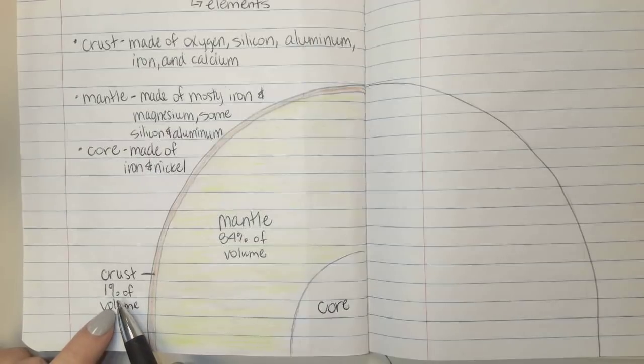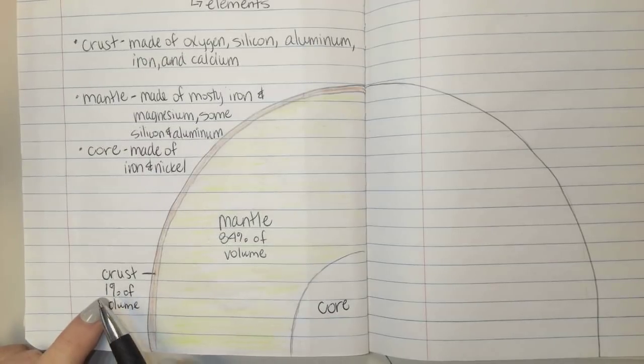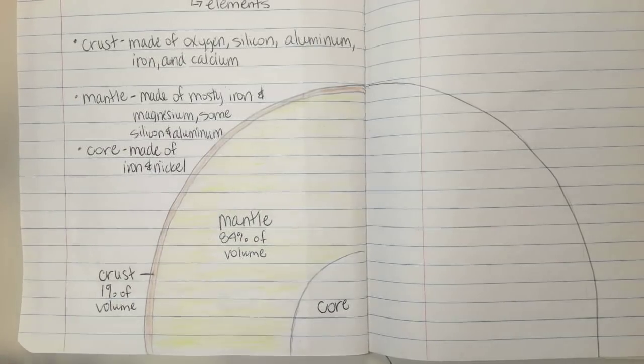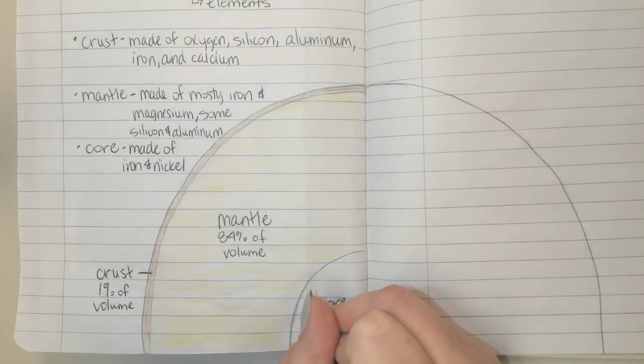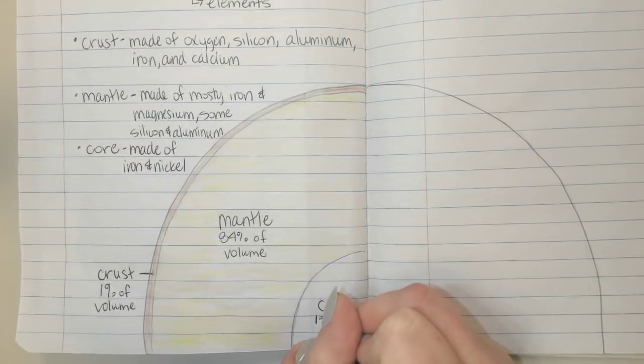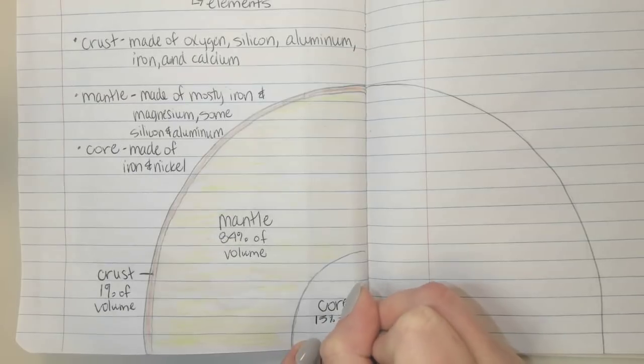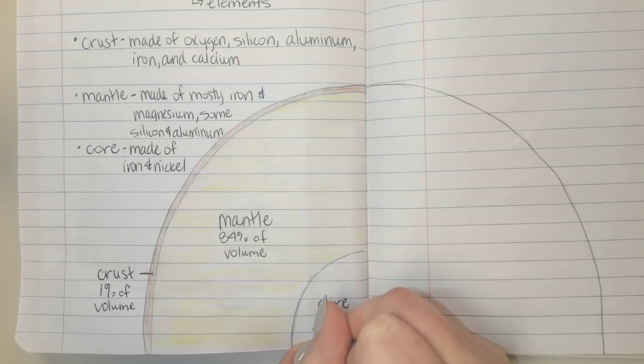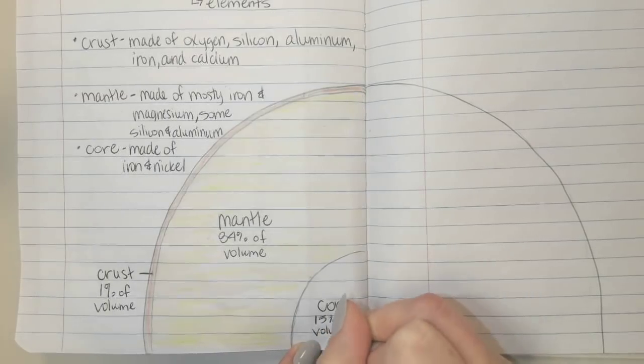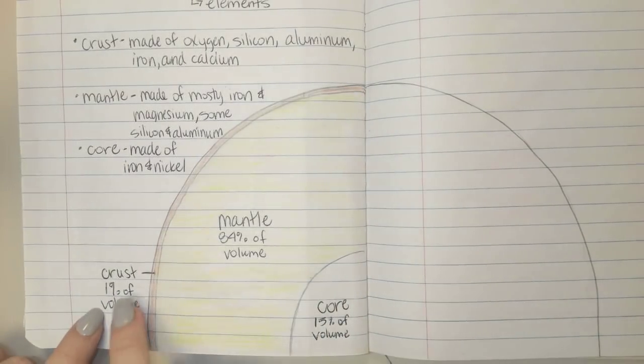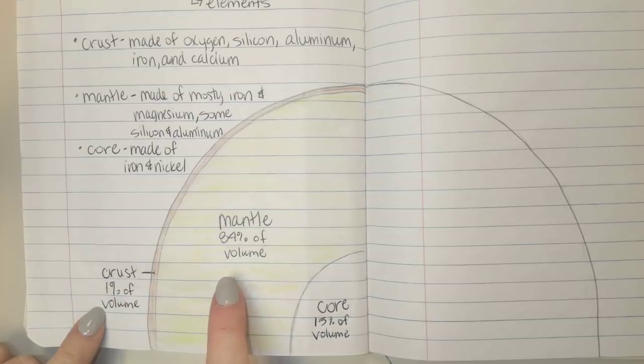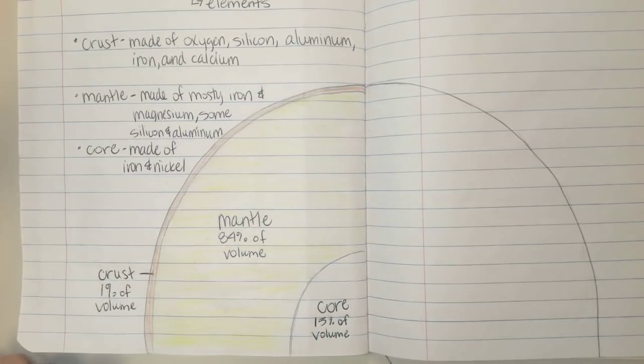If we know that percent means out of 100, we've used 1 plus 84, that's 85. That means that what we're left with is 15%. Our drawing might not be to scale or accurate, but this helps us see the comparison. The mantle is definitely the majority of the inside of the earth when we're looking at compositional layers.